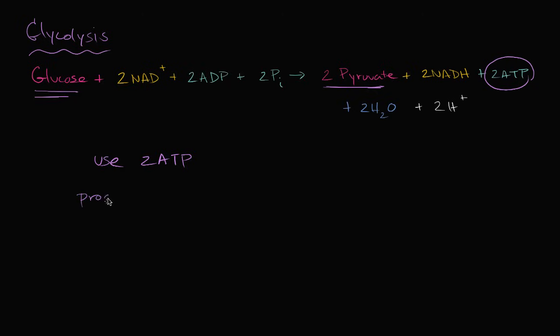And then you produce four ATPs for a net of plus two ATPs. And that's what we see right over here. You see a net of two ATPs being produced directly by glycolysis.